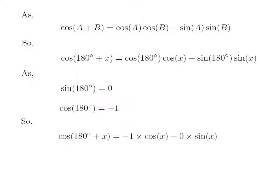Let us replace the value of sine of 180 degrees and cosine of 180 degrees in the above expression of cosine of 180 degrees plus x. So, we get cosine of 180 degrees plus x is equal to minus 1 into cosine of x minus 0 into sine of x. Since minus 1 into cosine of x is equal to minus cosine of x, and 0 into sine of x is equal to 0.